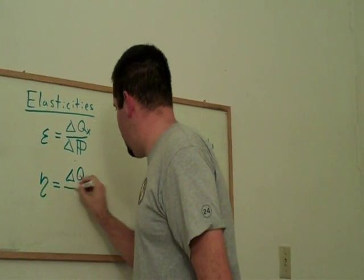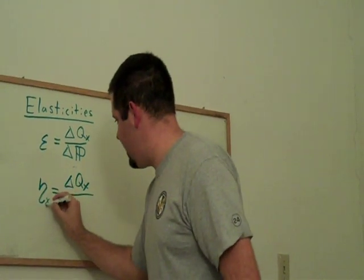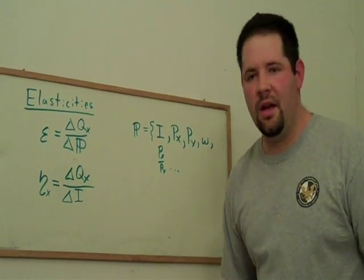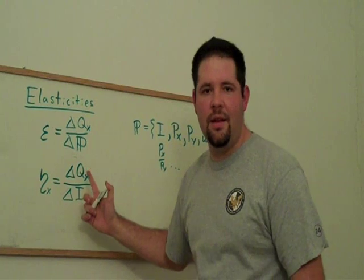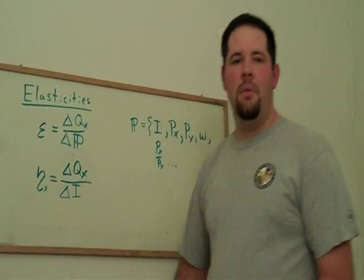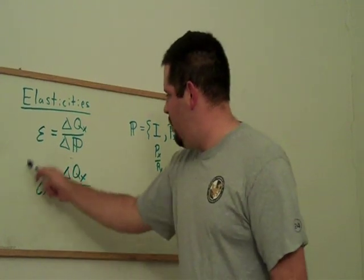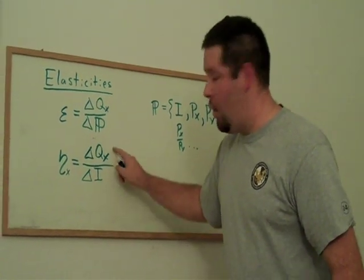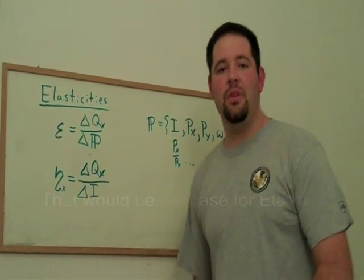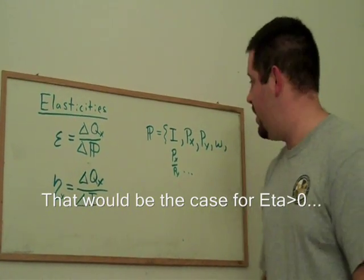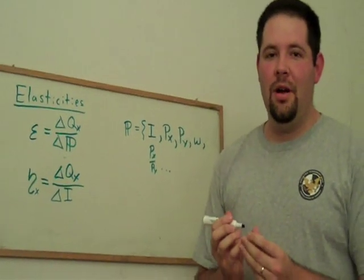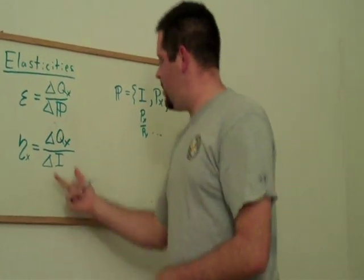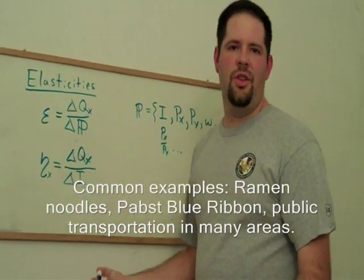Let's ask ourselves how the quantity of x changes, so we'll call this eta x, as we change income. We can ask ourselves what happens to the quantity demanded if we increase income by a particular percentage. Now, this will be what we call our income elasticity. Now, notice that if income increases and the quantity also increases, that will tell us that this is what we call a normal good. If this number is a negative number, that would be an inferior good. An inferior good is a good for which if your income goes up, you actually buy less of it.